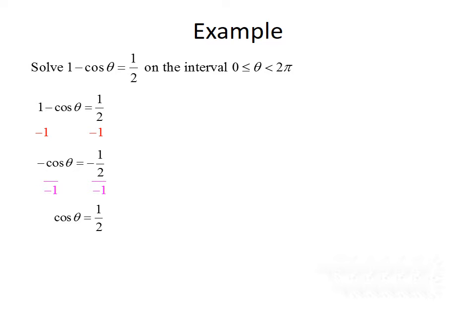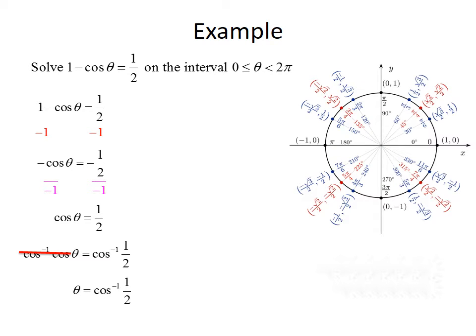Now that we have cosine of theta isolated, we can take the inverse cosine of both sides. The inverse cosine and the cosine cancel each other out, leaving us with theta equals the inverse cosine of 1/2. Again, 1/2 is one of the common values on the unit circle, so we can use it to evaluate. Remember, cosine is represented by the x-coordinate, so we want to find the values that have an x-coordinate of 1/2.